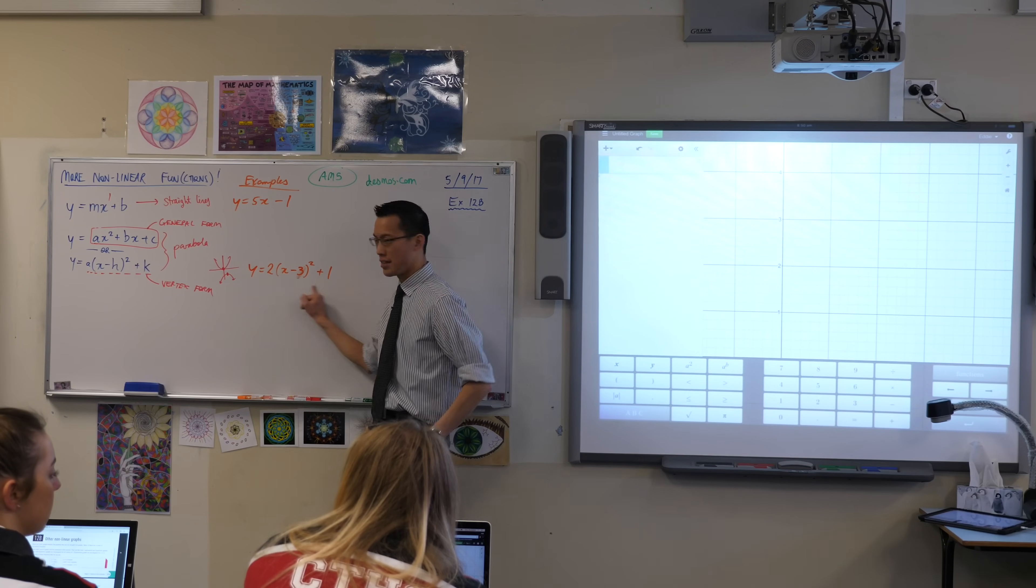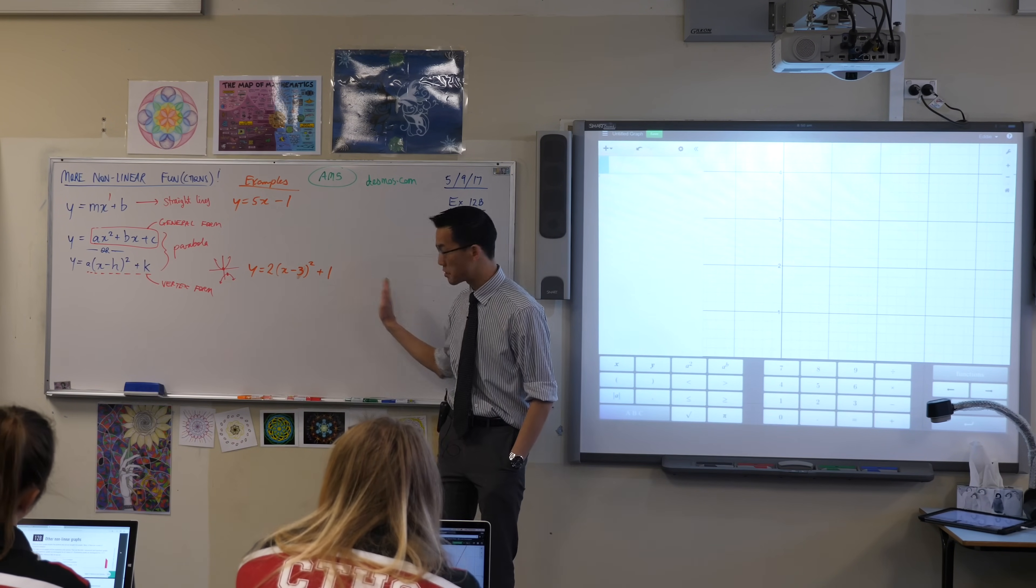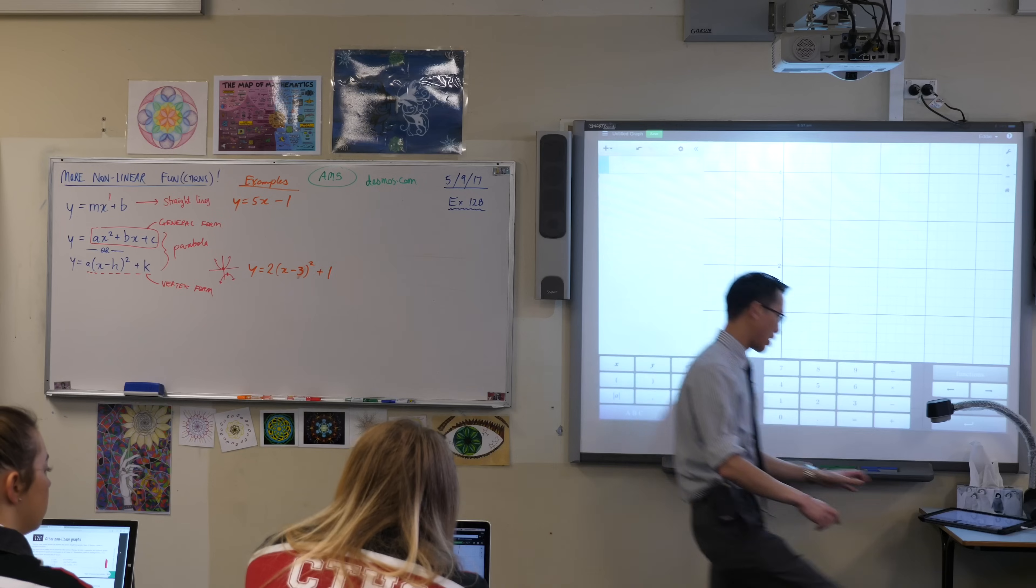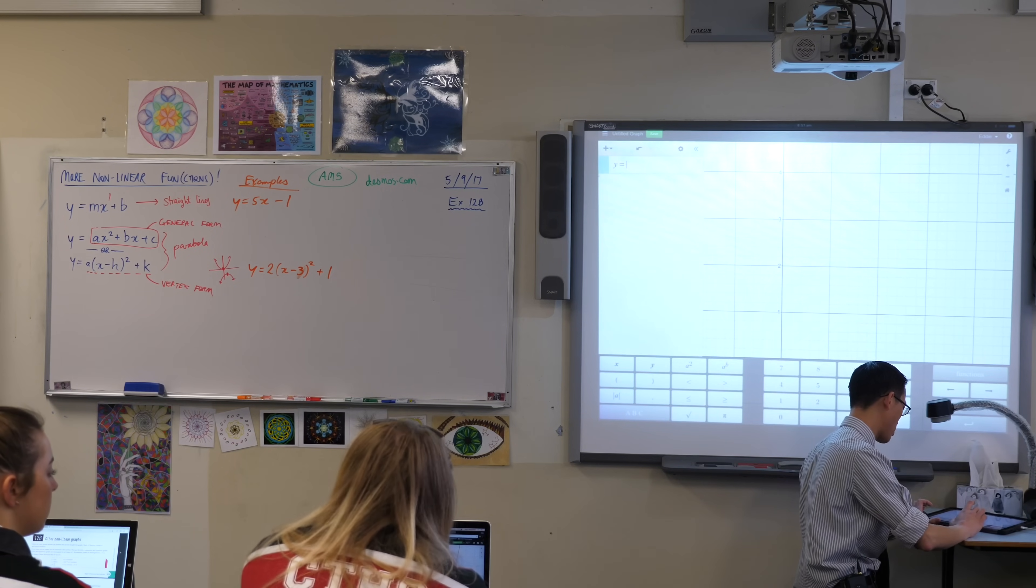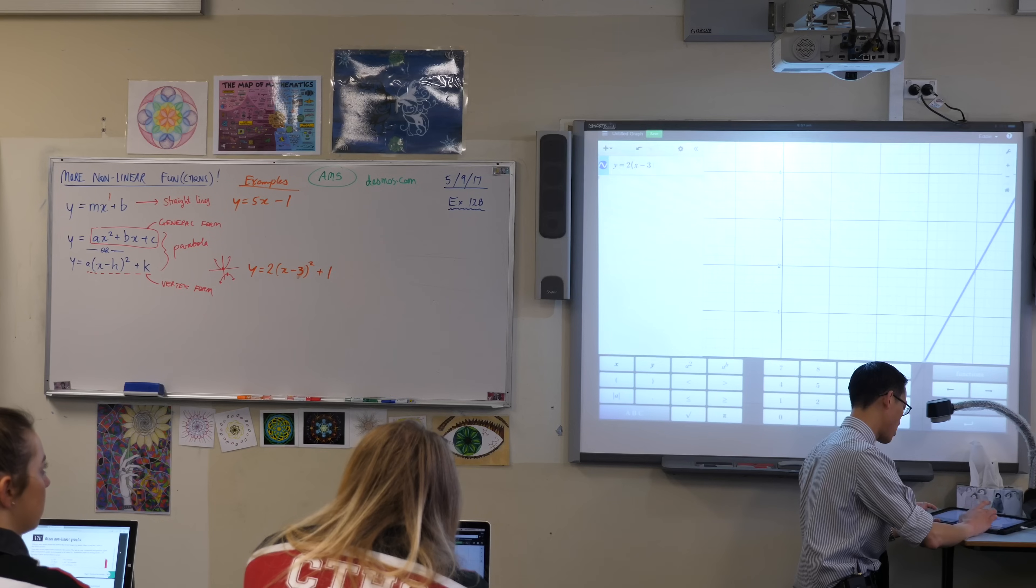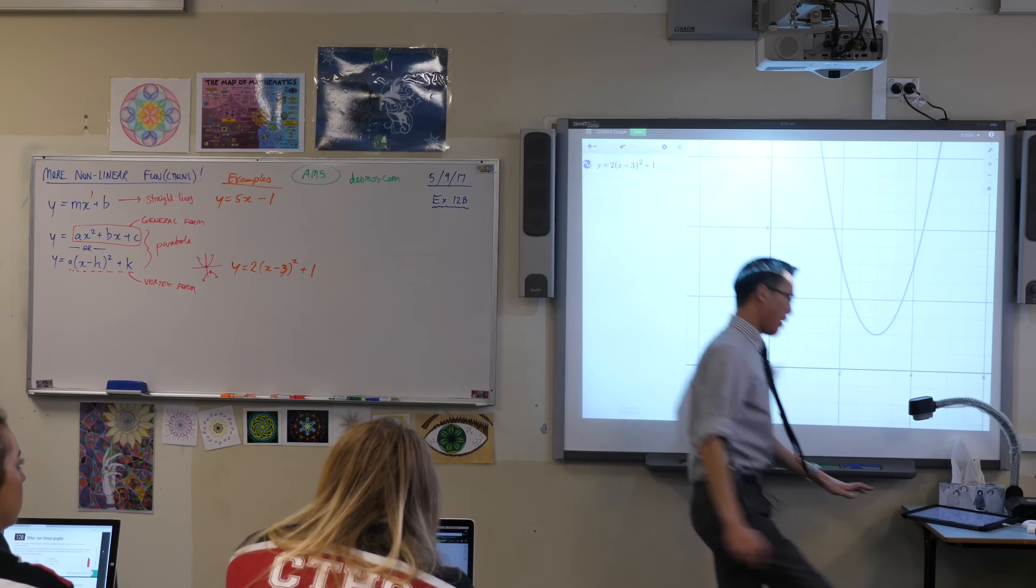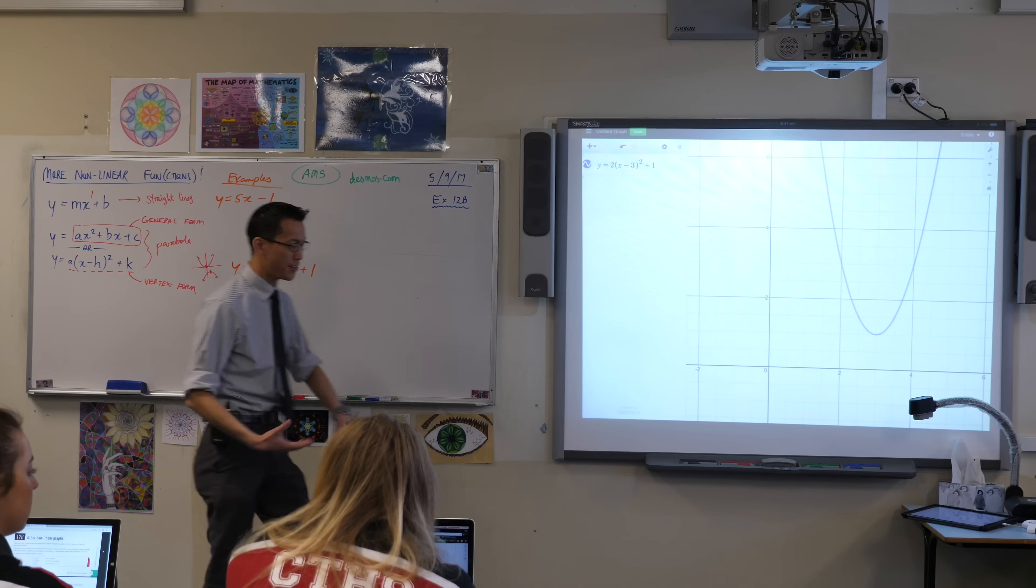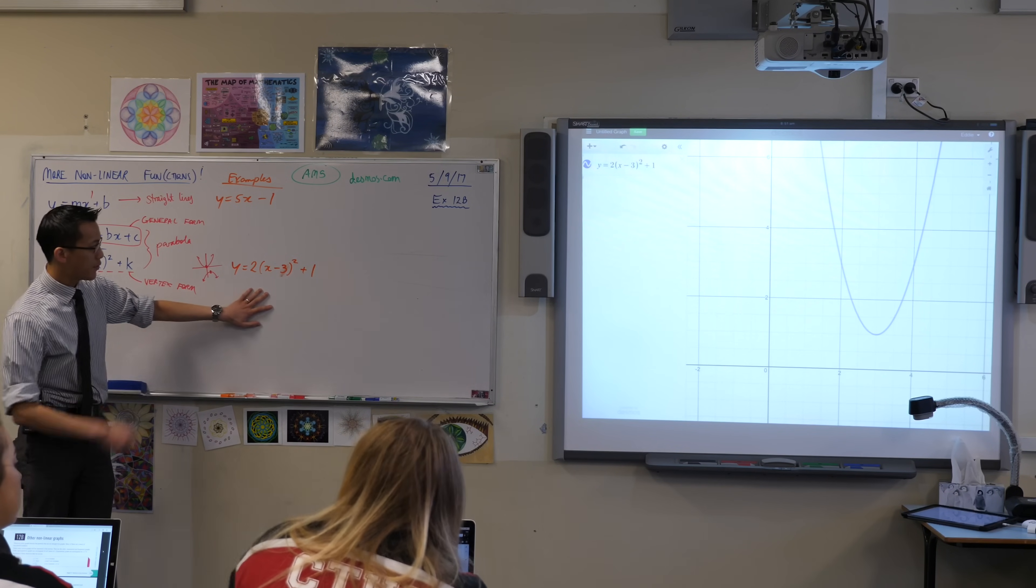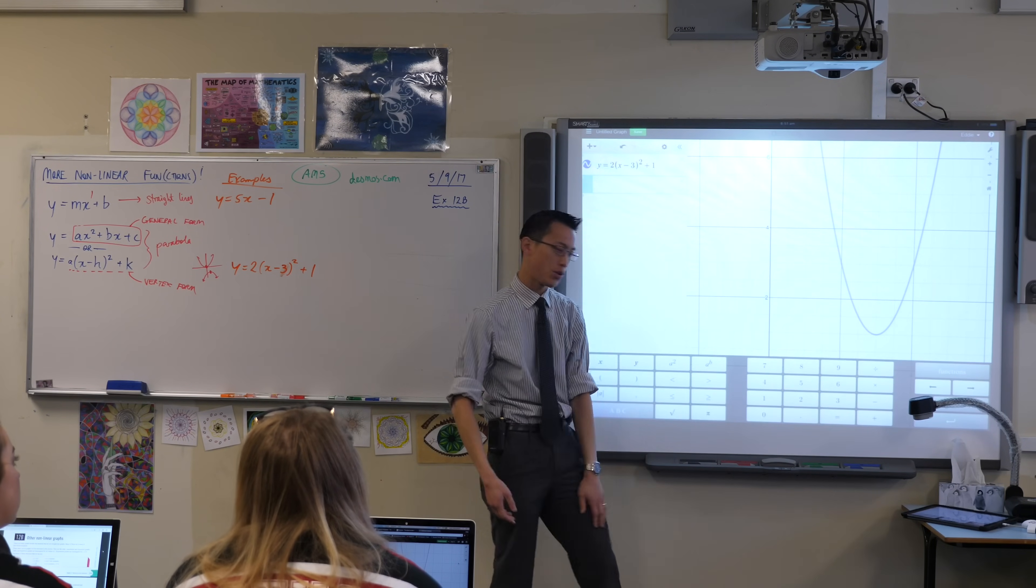So what we're going to do is just play around with this guy for a minute. So if we type in y equals this as it is, and you can see you've got the keyboard down here, it's a bit easier than Excel to use. Let's just chuck in the characters. y equals. And as promised, you can see for this particular version, this particular equation, there's the vertex right there.